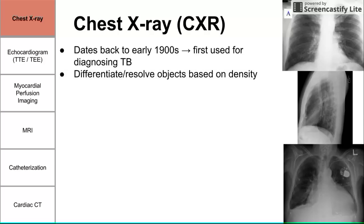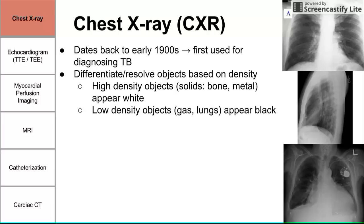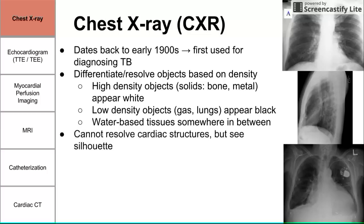Chest x-ray is used to differentiate or resolve objects based on density, based on the physical principles of x-rays passing through the chest. A high-density object like a bone or metal appears white — that's why you see a skeleton on an x-ray. A low-density object such as gas in your lungs appears black because the x-rays pass through without reflecting much. Water-based tissues, which make up the majority of the body, appear somewhere in between black and white.